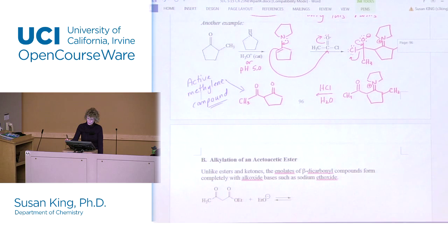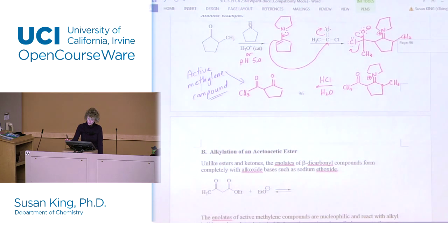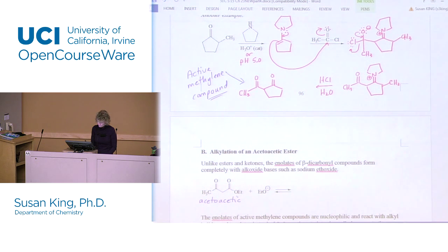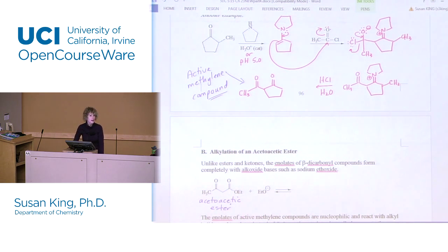A couple more reactions to talk about. The first one is alkylation of acetoacetic ester. This is an acetoacetic ester — the 'aceto' is for the acetyl group, the keto group.